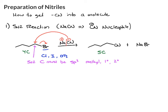The second method we can use to get a nitrile into a molecule is nucleophilic addition to an aldehyde or ketone — the carbonyl of an aldehyde or ketone. For example, let's say we have this ketone here. The conditions we'll use are sodium cyanide and an acid like HCl.